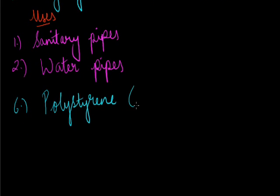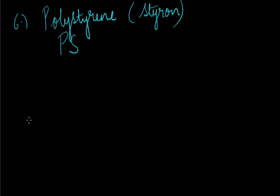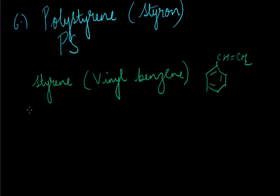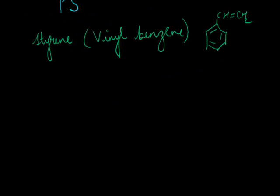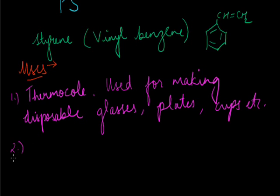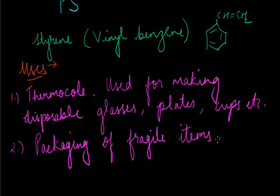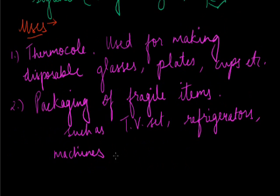Next is polystyrene, also called styron. The monomer unit is styrene, also called vinyl benzene. When molecules of styrene combine, polystyrene is formed. Polystyrene is used for making thermocol, which is used for making disposable cups. It is also used for packaging fragile items such as TV sets, refrigerators, and other machines.